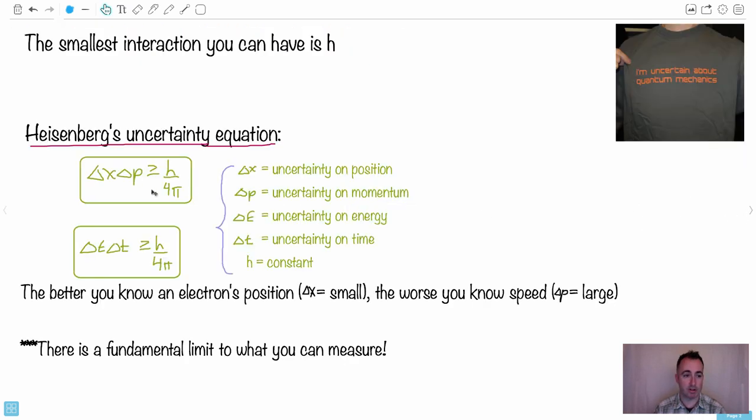I'm going to just show you. Here's the equation. Just delta x delta p greater than h over 4 pi. Who cares, right?